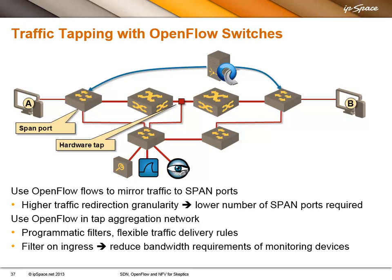Mentioning traffic tapping, there are two very nice things you can do with OpenFlow switches. You can do all these things with any traditional switch — it's just that we never had the capability to program it. You can use OpenFlow to send traffic through multiple ports at the same time. You can implement something like a SPAN port but with way better granularity — so you don't have to mirror an entire port; you can mirror just HTTP traffic to a SPAN port. Or you can use OpenFlow in the aggregation network to implement programmatic filters, delivering traffic from one port to multiple output ports. Because you're doing the heavy lifting with all the filtering in the aggregation network, you save on the bandwidth requirements of the monitoring devices.